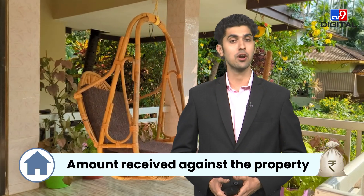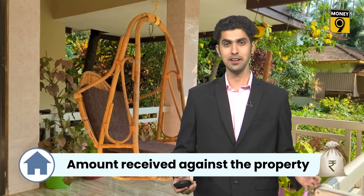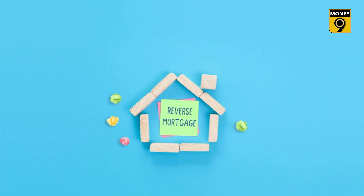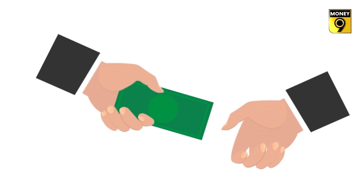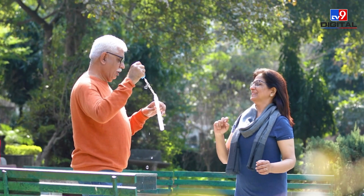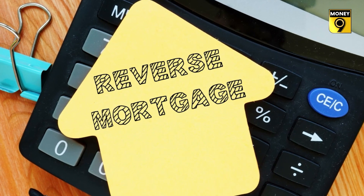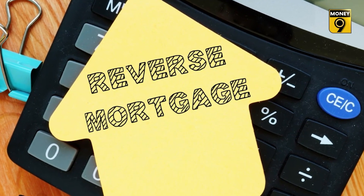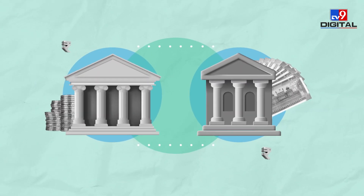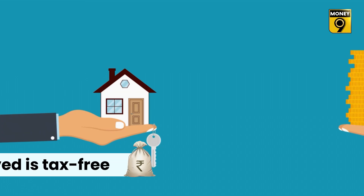In reverse mortgage, you keep the ownership of your property with the bank or financial institution and in return receive money in installments. The predetermined amount can be received as a lump sum or in monthly installments. As long as the property owner is alive, they can stay in their home while the bank makes payments, serving as a regular source of income for the elderly.